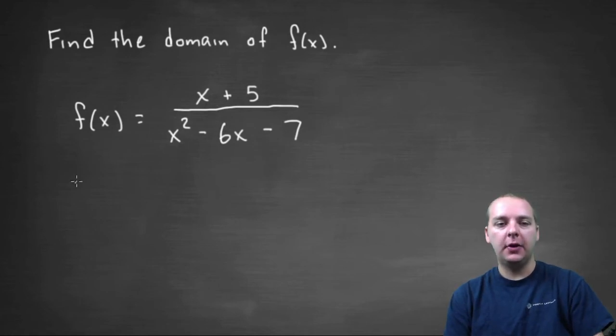So what we're going to do is we'll take this denominator here, off to the side, I'll jot it down here. We'll have x squared minus six x minus seven, we'll set that equal to zero and then we're going to see where is that true, where is this guy equal to zero?